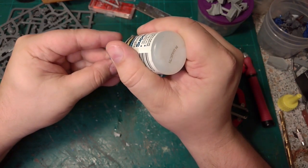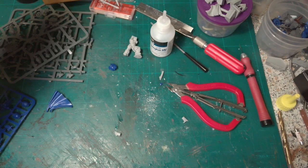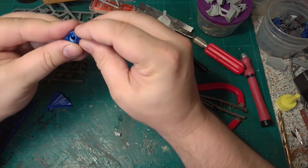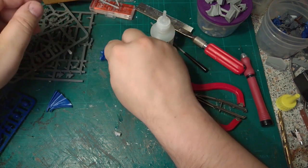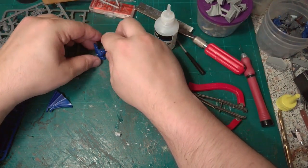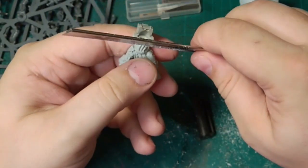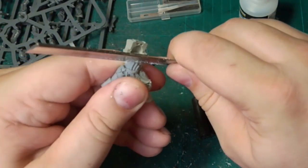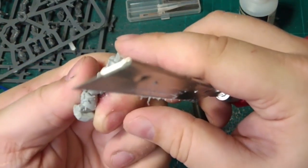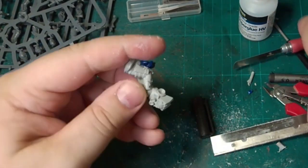I'm just going to assemble the body together from the Primaris captain. And while that's setting, I'm going to cut very carefully the legs just above that stomach piece that these Terminators seem to have at the moment.